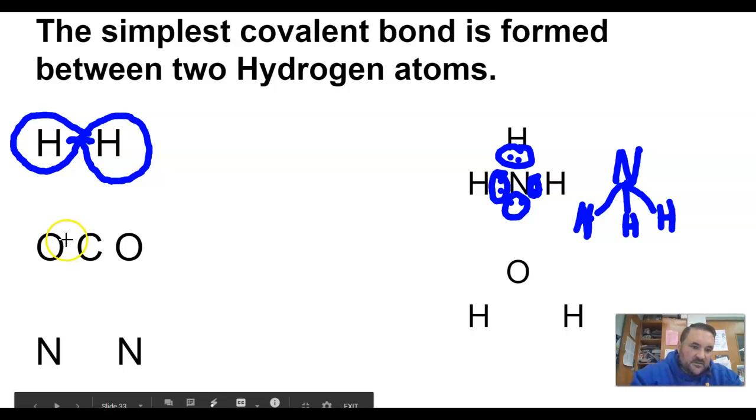This is oxygen. Oxygen needs to share two. This oxygen needs to share two. Carbon only has four valence electrons. So it shares one there, one there, one there, and one there. So there's the eight for carbon, so one, two, three, four, one, two, three, and four for the oxygen. One, two, three, and four for that oxygen.